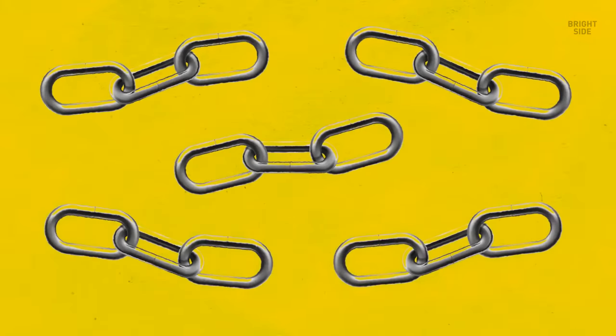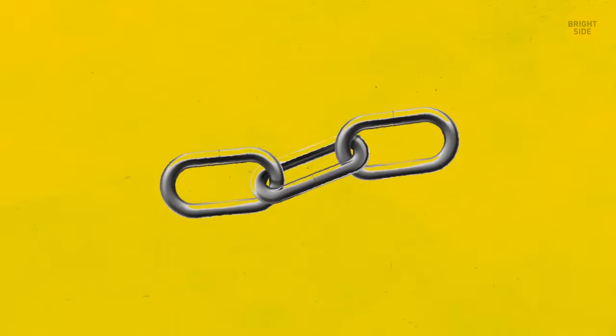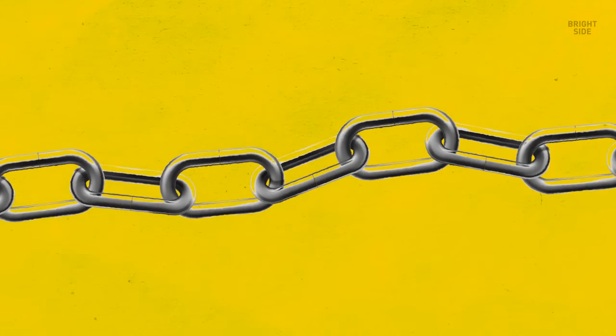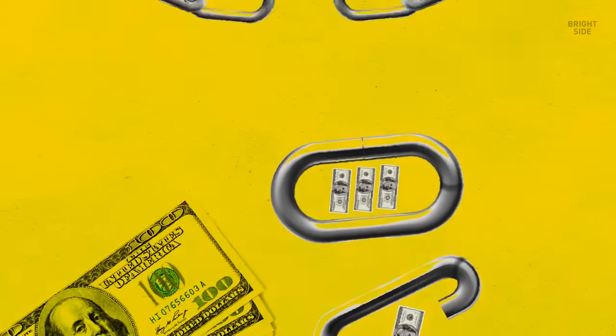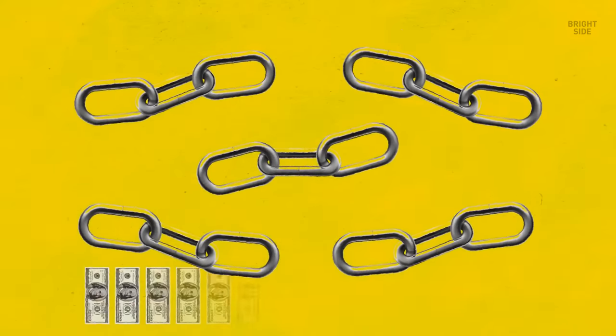You have five pieces of chain, each made up of three links. You have to make a long chain out of these five pieces. Welding an open link will cost you $3 and breaking a link open is $1. Can you make a long chain if you have only $15?